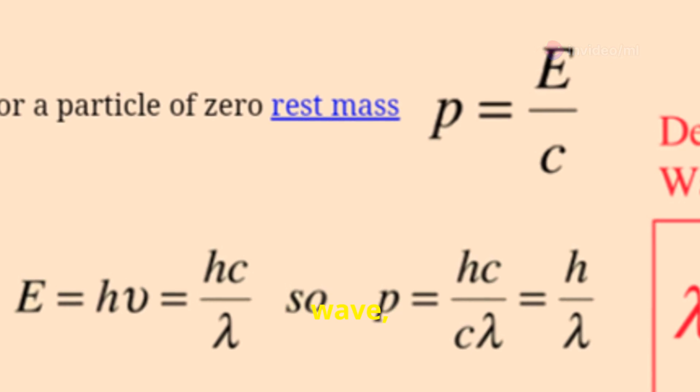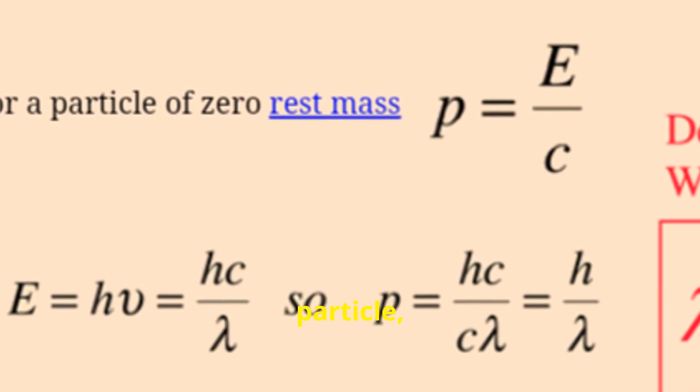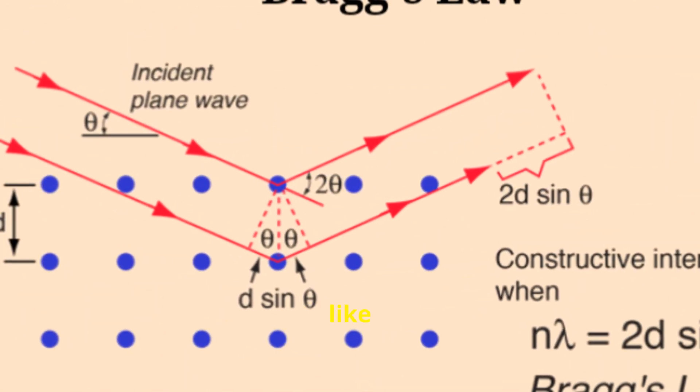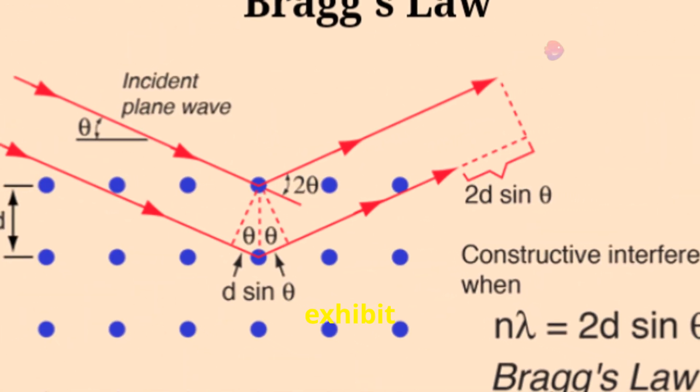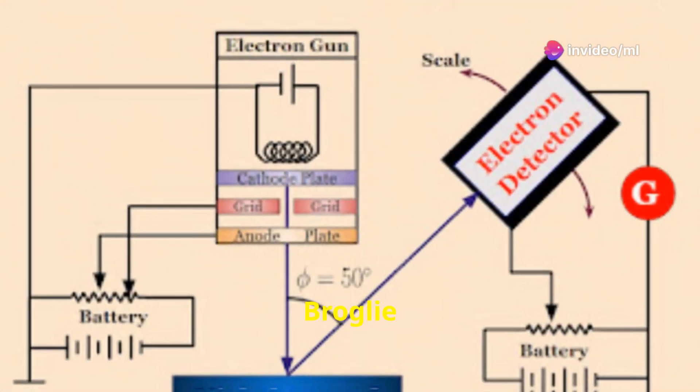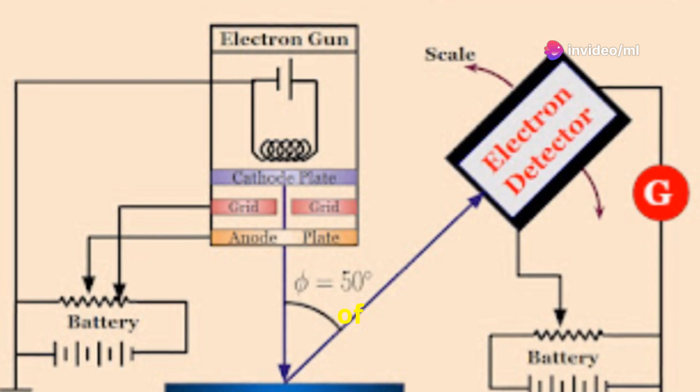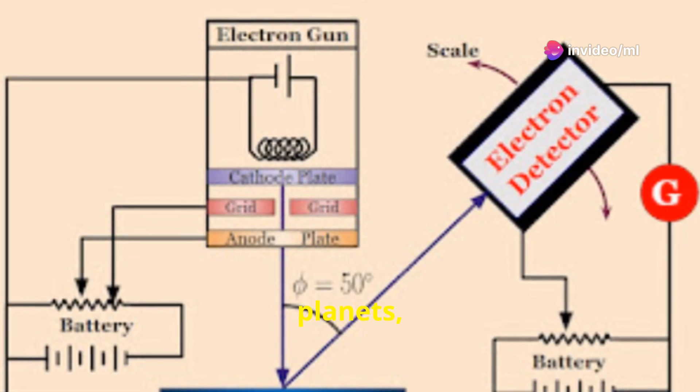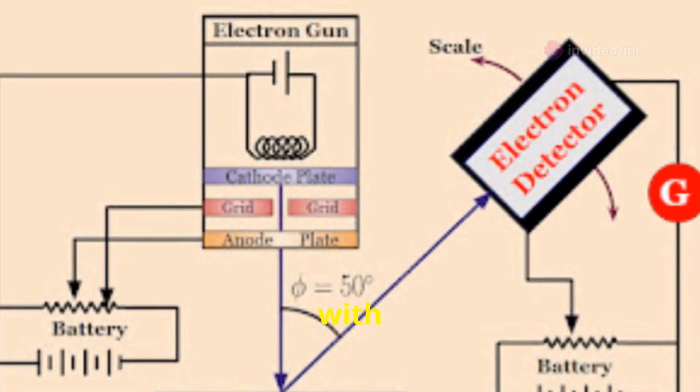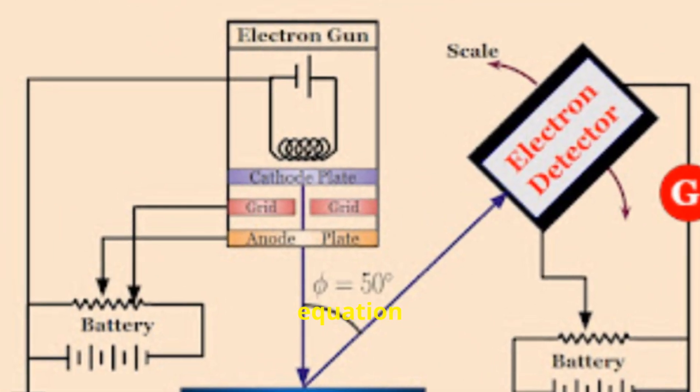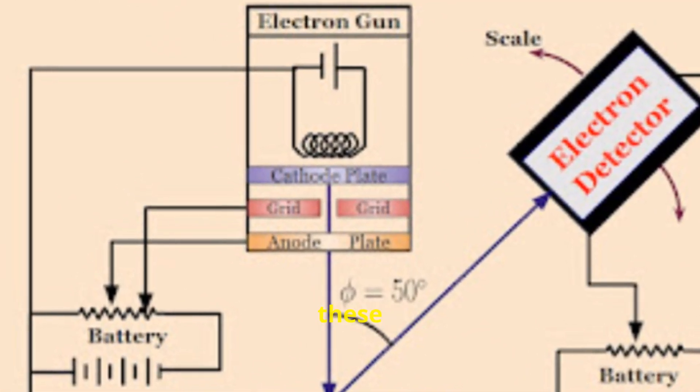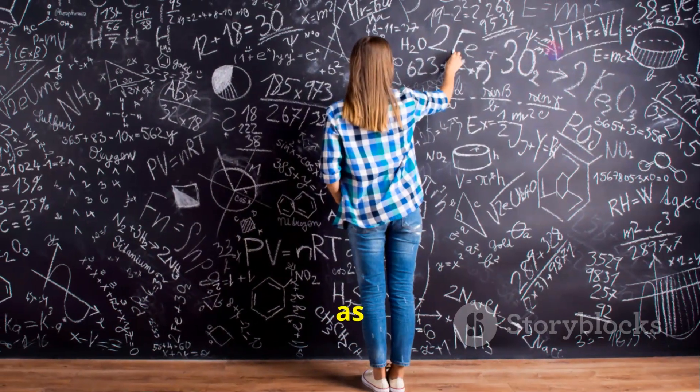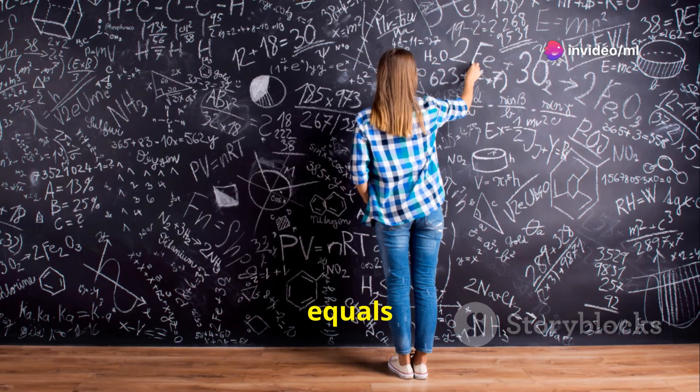If light, a wave, could also behave like a particle, then perhaps particles like electrons could also exhibit wave-like properties. De Broglie proposed that every particle of matter, from electrons to planets, has a wave associated with it. He even provided an equation to calculate the wavelength of these matter waves, now known as the de Broglie wavelength: λ equals h over p.